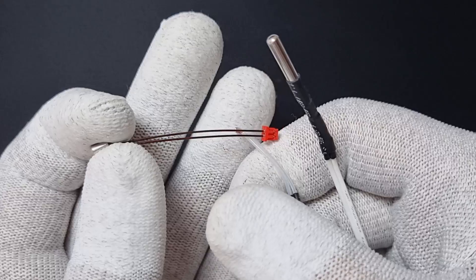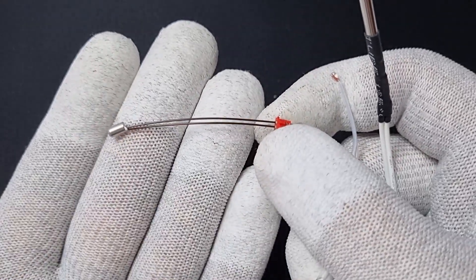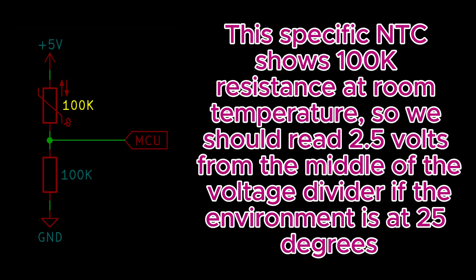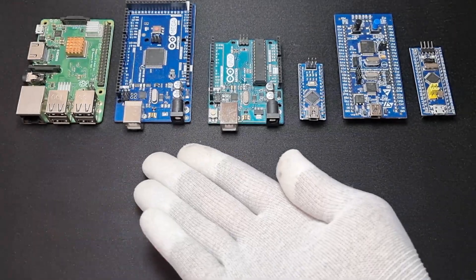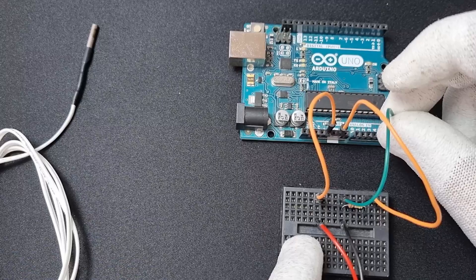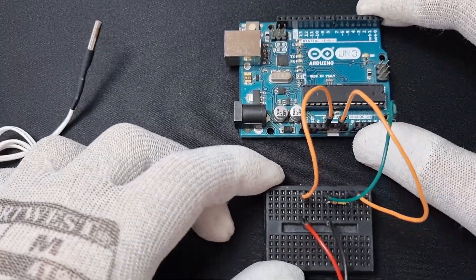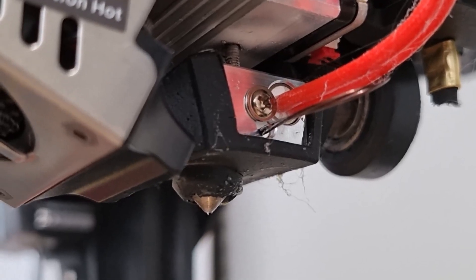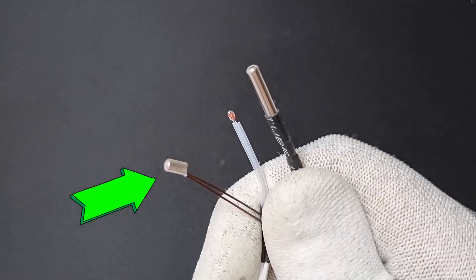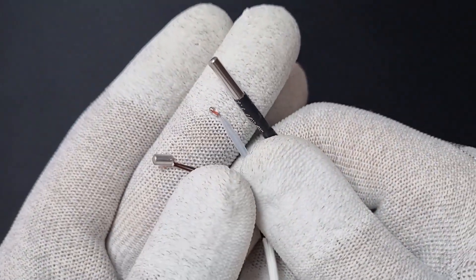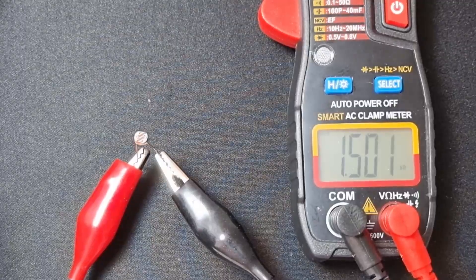Another type of NTC is the NTC thermistor, commonly used for temperature sensing. We typically connect this in a voltage divider configuration and connect the midpoint of the divider to our preferred microcontroller's ADC to read the voltage, which correlates to the temperature. For example, my 3D printer uses an NTC thermistor to monitor the temperature of the hotend, rated at 100 kilo ohms, meaning they have a resistance of 100 kilo ohms at room temperature.